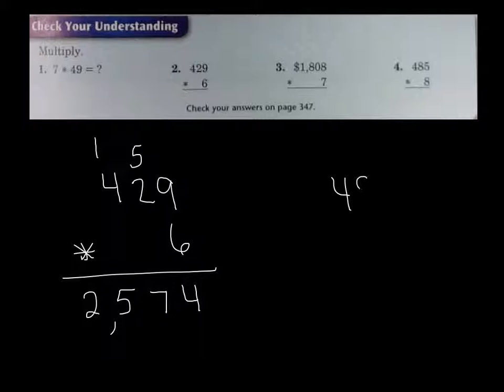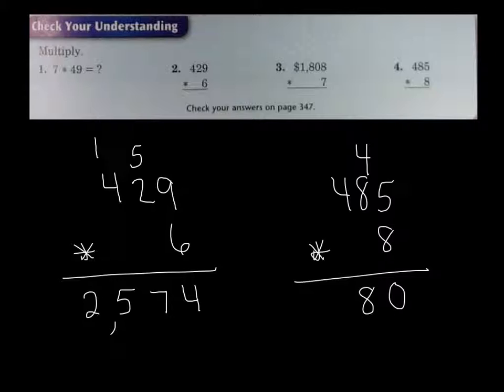And the final one, we have 485 times 8. Go ahead and check your own. 5 times 8 is 40. 8 times 8 is 64. Plus 4 is 68. 8 times 4 is 32. Plus 6 is 38.